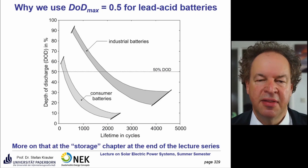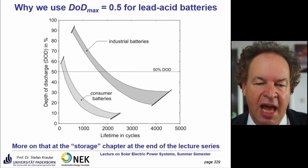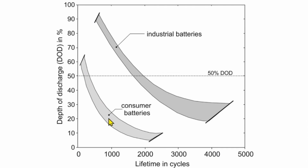Regarding depth of discharge: a graph shows how battery lifetime depends on depth of discharge for consumer-type (e.g., car) batteries versus industrial batteries. Consumer batteries discharged very deeply have very short lifetimes — less than a year for the application. Industrial batteries, roughly double the cost, last much longer. Even discharged to 90%, they provide about 800 cycles. At 50% depth of discharge, lifetime is about 1,800–2,000 cycles. At only 30% discharge, it can approach 4,000 cycles.